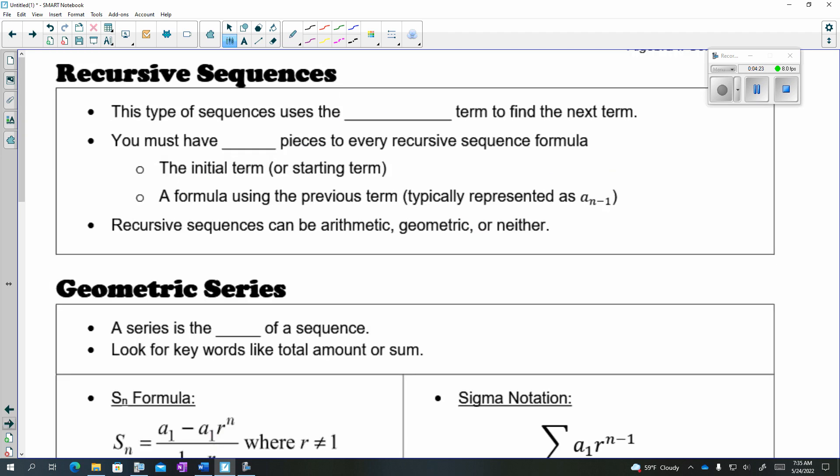Recursive sequences can be used for arithmetic, for geometric, or for neither. They could just be a pattern. So this type of sequence always uses the previous term in order to define the next term. You always have to have two pieces when you're writing a recursive formula. An initial term,